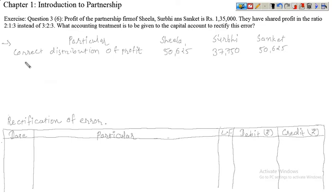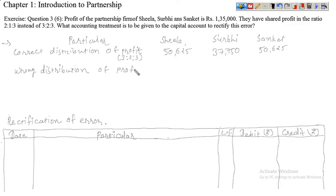Ab humko jo wrong distribution of profit hai, usko likhna hai — kis hisab se humne distribution kiya hai. Wrong distribution of profit: jo galat tarike se profit distribute kiya gaya hai, woh 2:1:3 proportion mein kiya gaya hai. So yaha pe Sheila ka 1,35,000 multiplied by 2 divided by 6 — woh kitna aega? 45,000 aega.